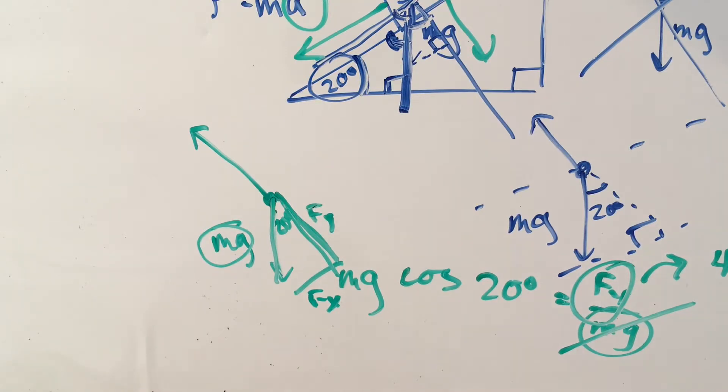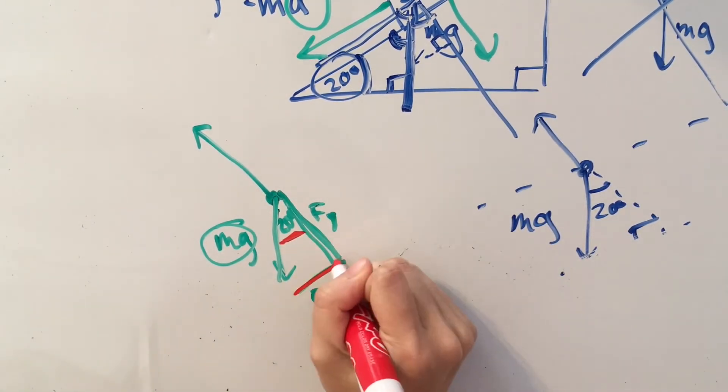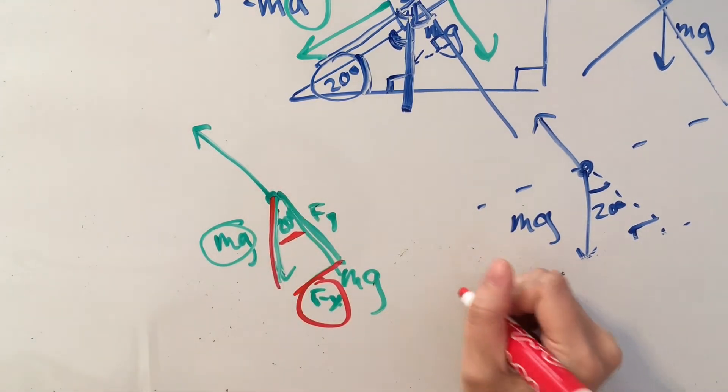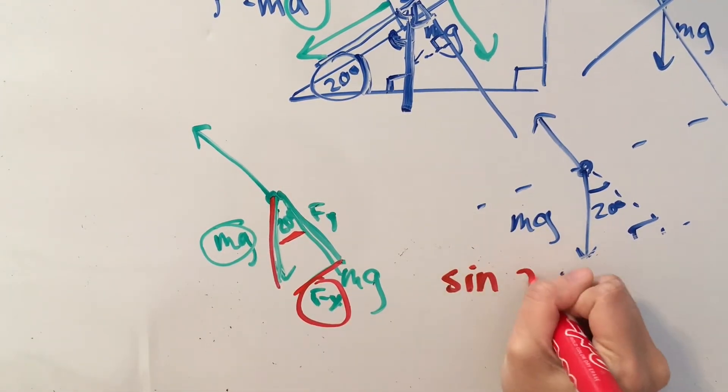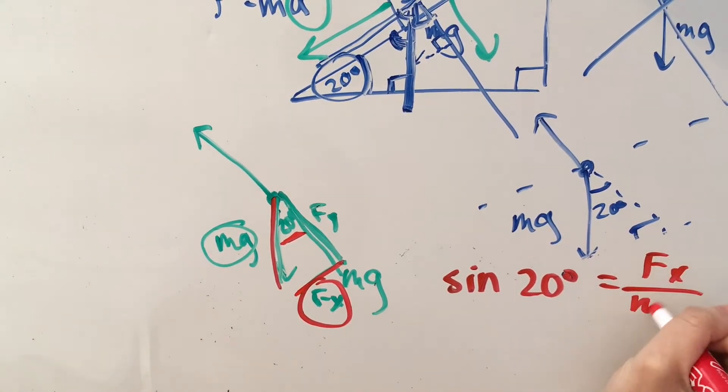So what we really need to find is the x component of our mg force. We'll be able to do that with sine instead of cosine. The sine of this angle is going to be opposite, so our x component over the hypotenuse.